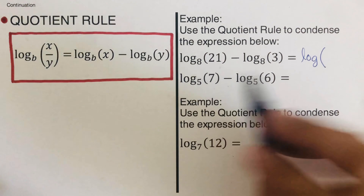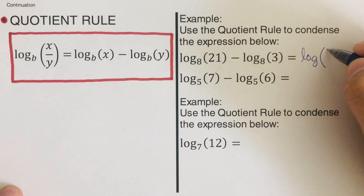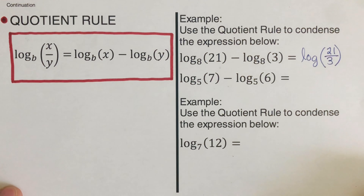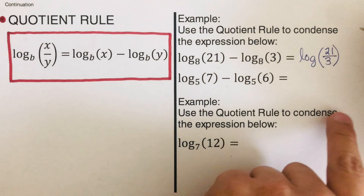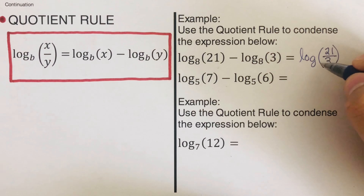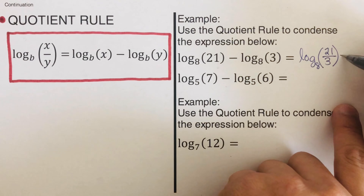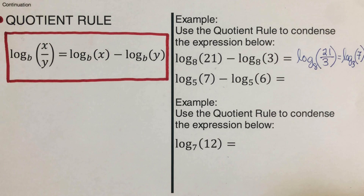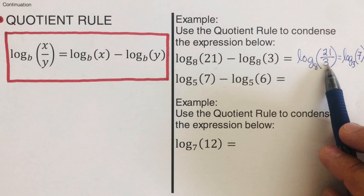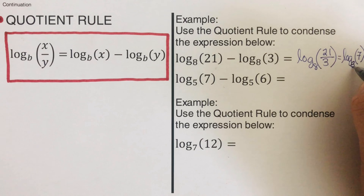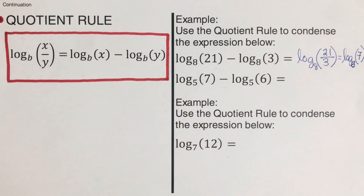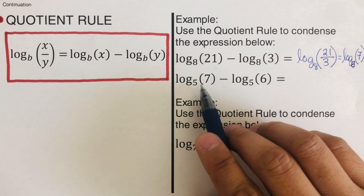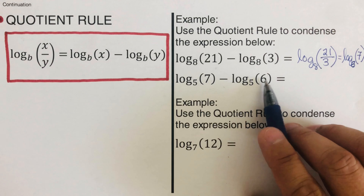Our x is 21 and our y is 3, so we rewrite this as log of 21 over 3, to the base 8. Now let's try: log of 7 to the base 5 minus log of 6 to the base 5.